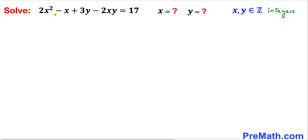In this video we are going to solve the equation 2x squared minus x plus 3y minus 2xy equals 17. In other words we are going to find the value of x and y where x and y are integers.